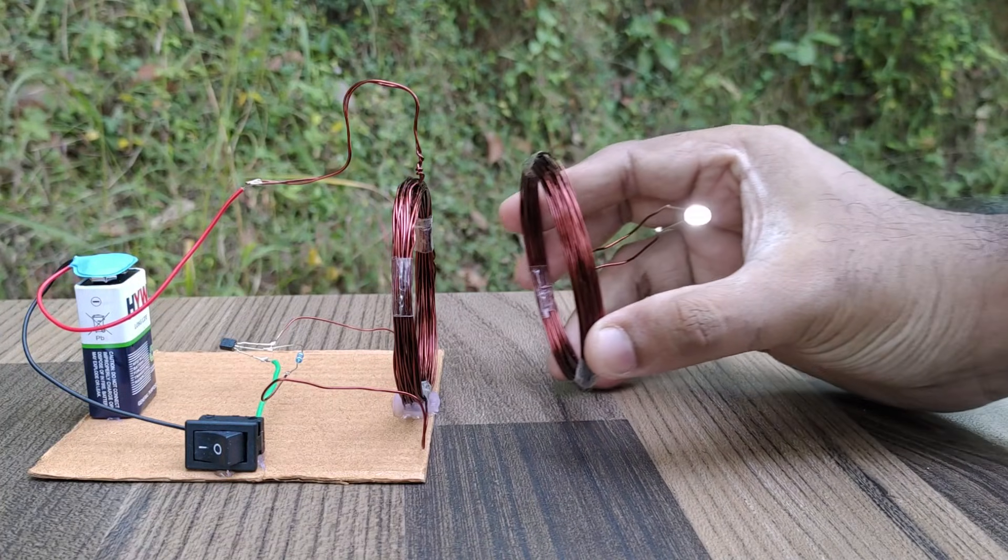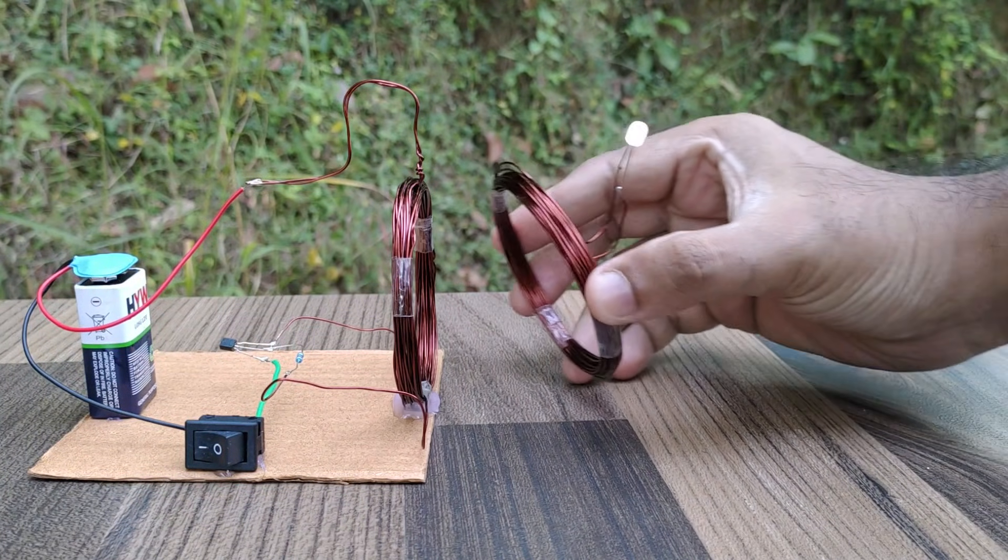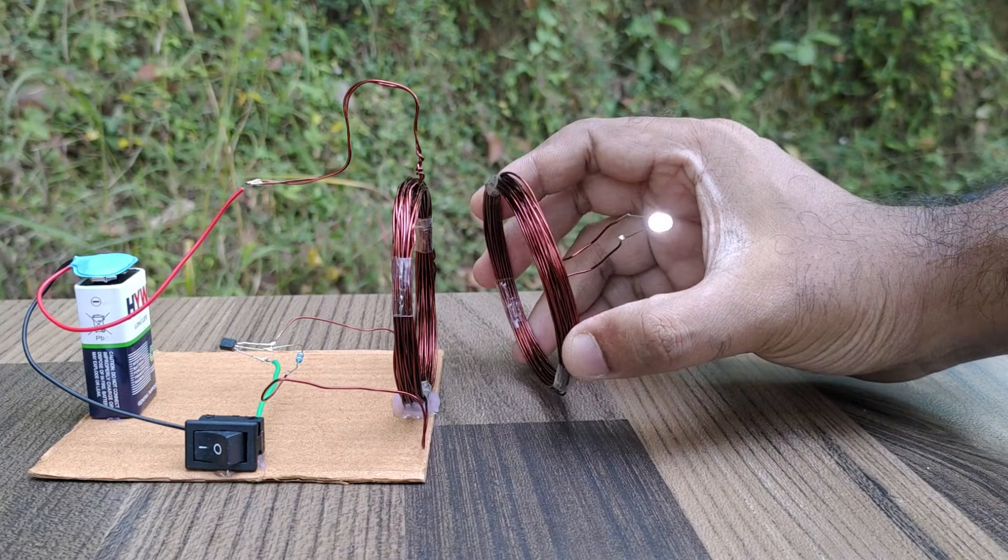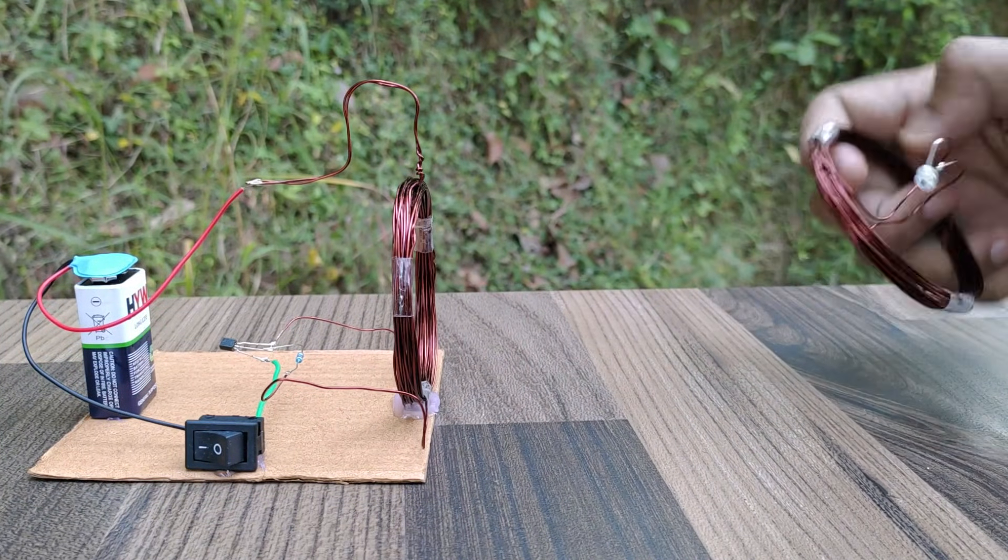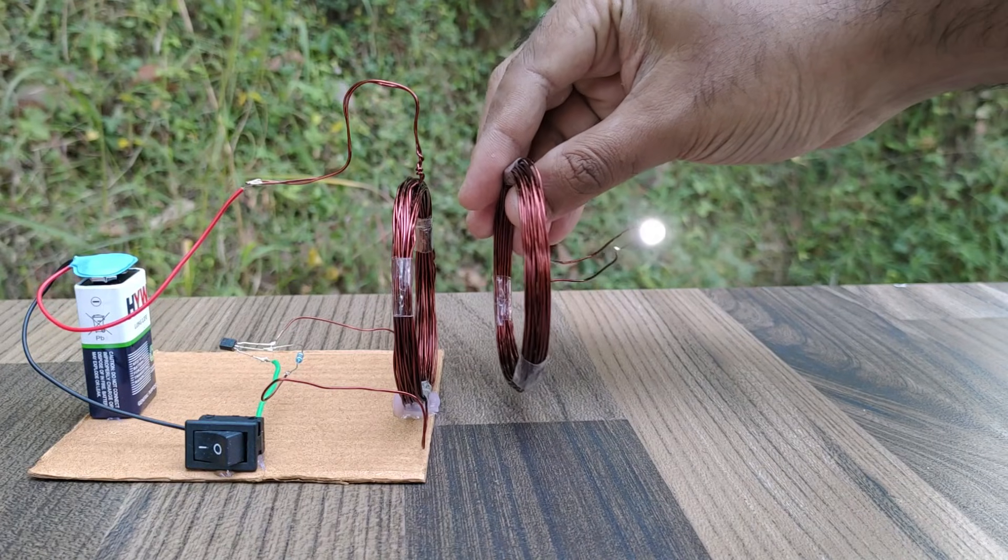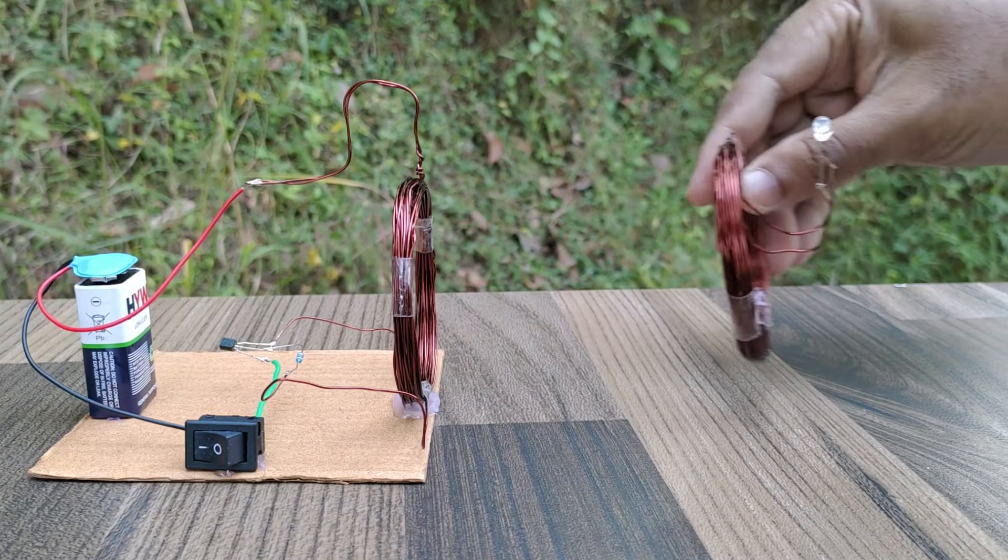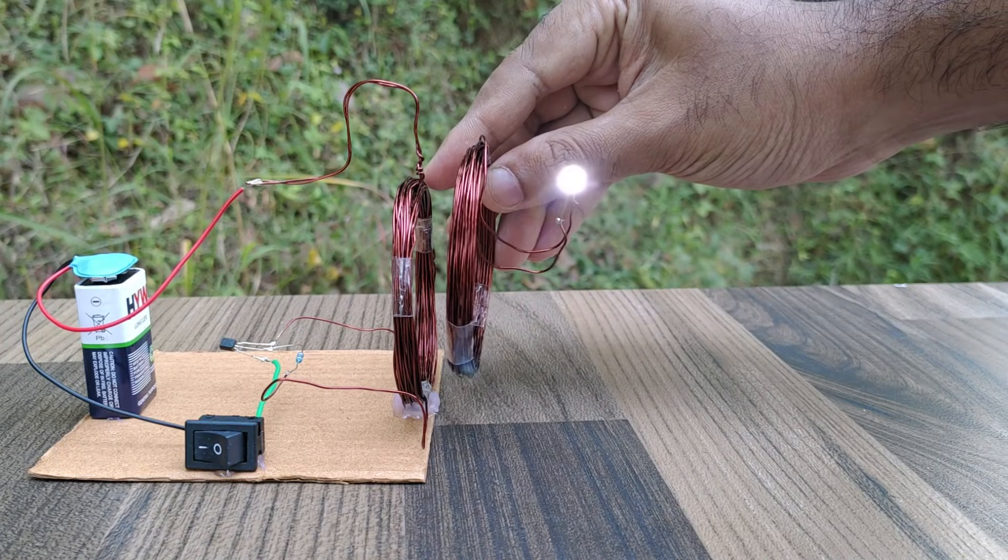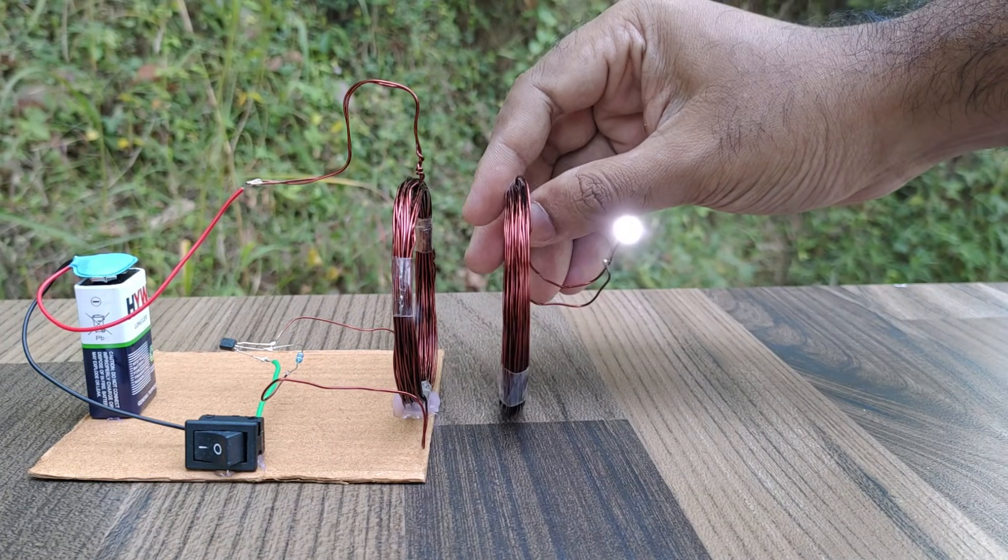But the bulb lights up when the coil is brought near the transmitter coil. The transmitter coil creates short pulses of current. This creates a magnetic field in the transmitter coil. So when the receiver coil is brought near it, an EMF is induced in the coil due to Faraday's law of electromagnetic induction. This lights up the LED bulb.